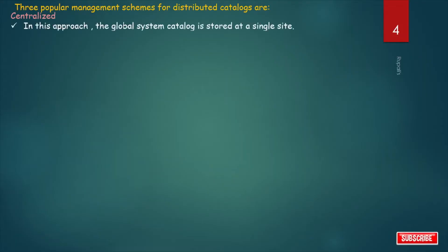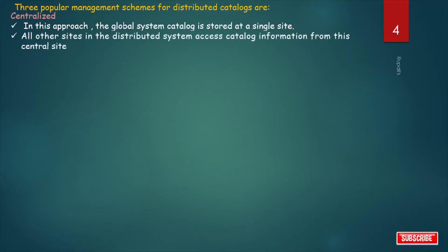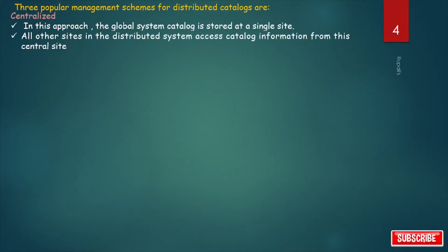There are three popular management schemes for Distributed Catalog. The first one is Centralized. In this approach, there is one global system catalog stored at a single centralized site. All other sites in the distributed system access catalog information from that central site's global system catalog.